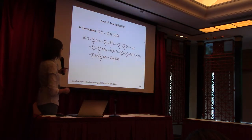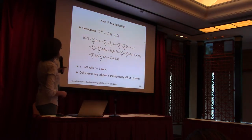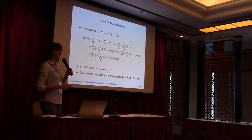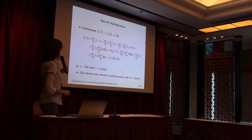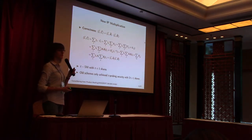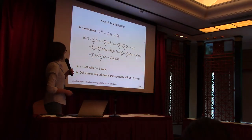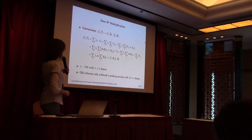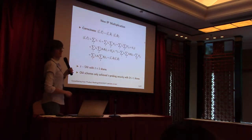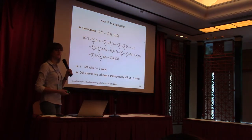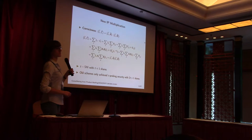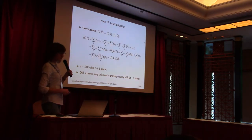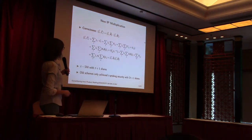We show this scheme to be TSNI, giving good composability properties. It needs only T+1 shares, which is the optimal amount of shares needed. All prior schemes only had T-probing security with no composability guarantee, and required 2T+1 shares. So we have a real improvement here.